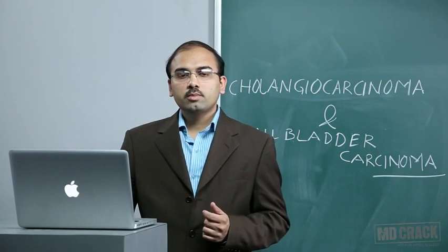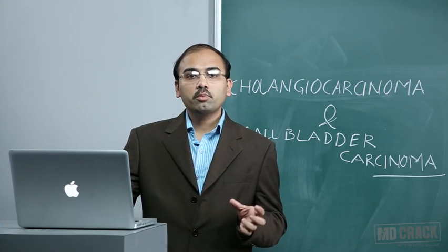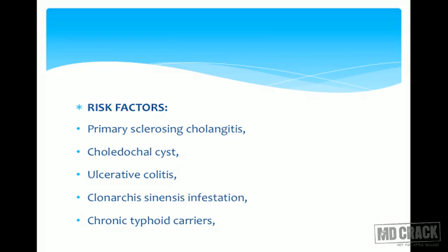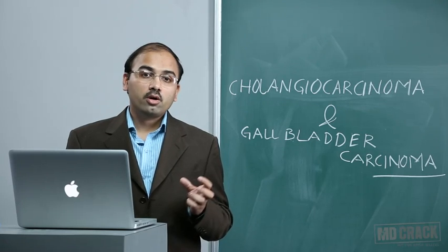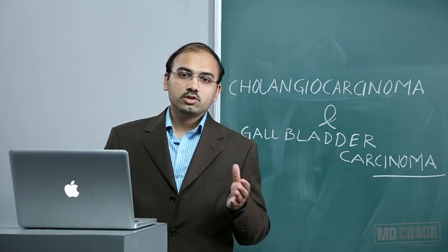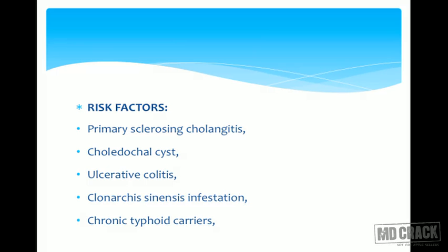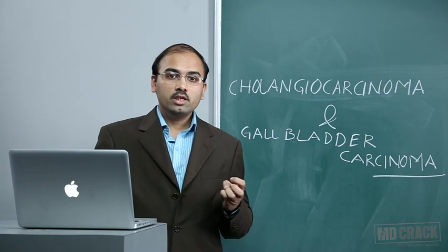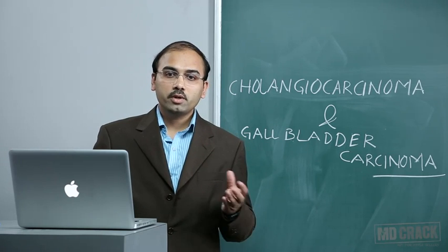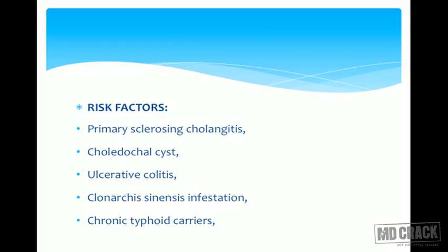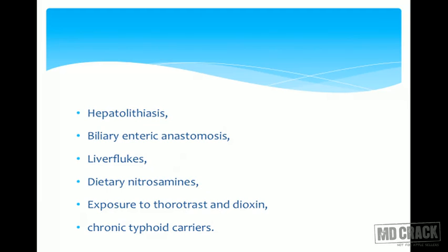We'll now see cholangiocarcinoma and gallbladder carcinoma — two important malignancies arising from the biliary epithelium. Risk factors for cholangiocarcinoma include primary sclerosing cholangitis, presence of choledochal cyst or remnants of choledochal cyst remaining after inadequate excision, ulcerative colitis, Clonorchis sinensis infection, chronic typhoid carriers, and hepatolithiasis — stones in the hepatic ducts.